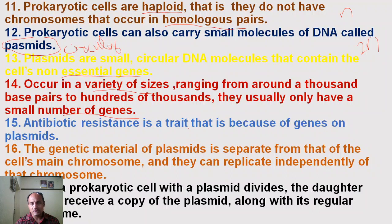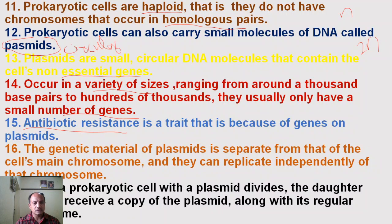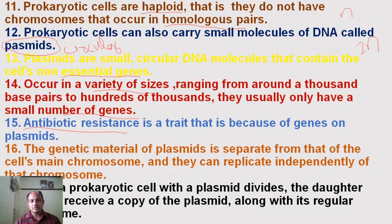The presence of plasmids and their specific genes can give antibiotic resistance to the particular bacterial cell. The genetic material of the plasmid is separate from the cell's main chromosome and can replicate independently. Plasmids are extrachromosomal DNA molecules that are self-replicating. When a prokaryotic cell with a plasmid divides, the daughter cells also receive a copy of the parent plasmid along with the regular chromosome.